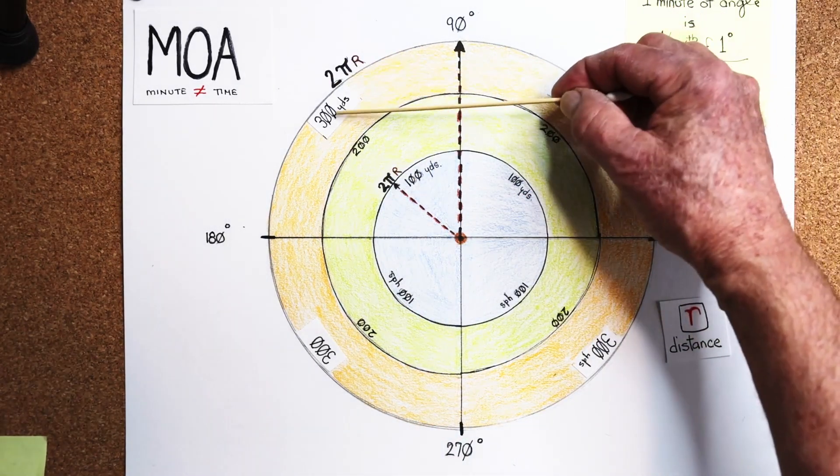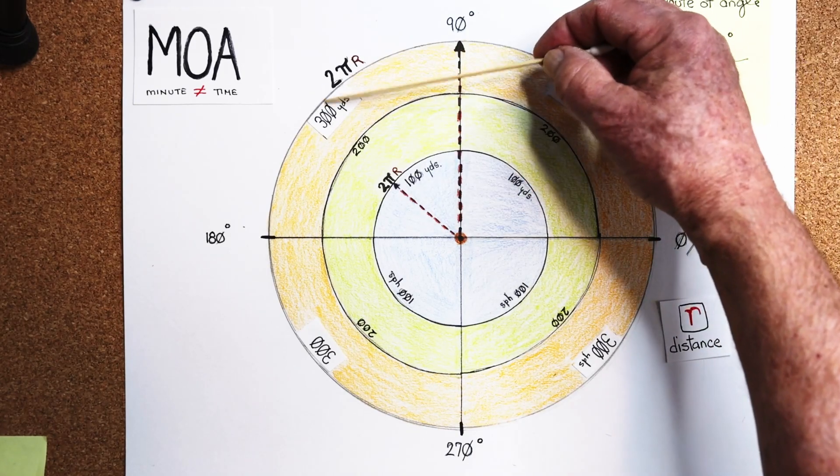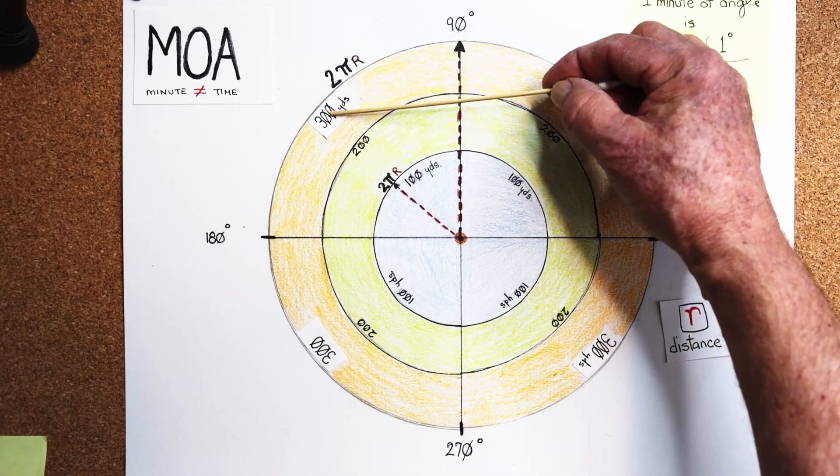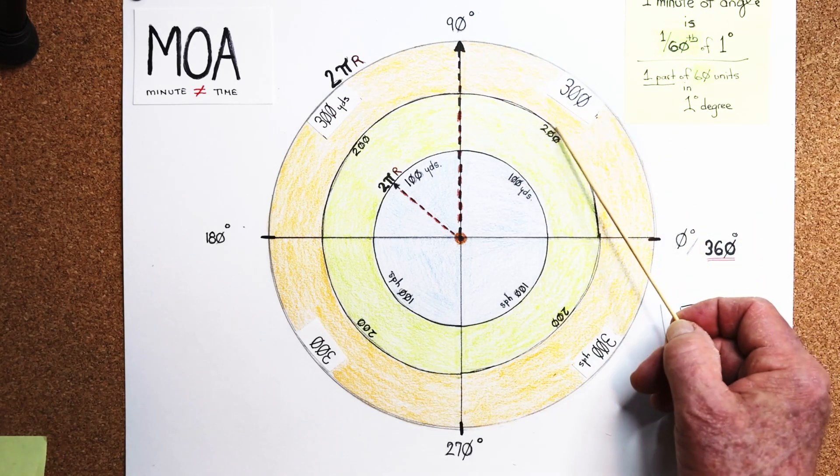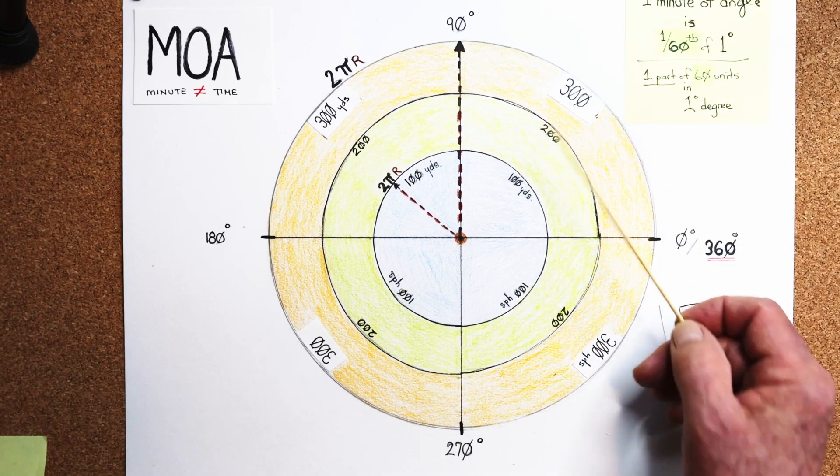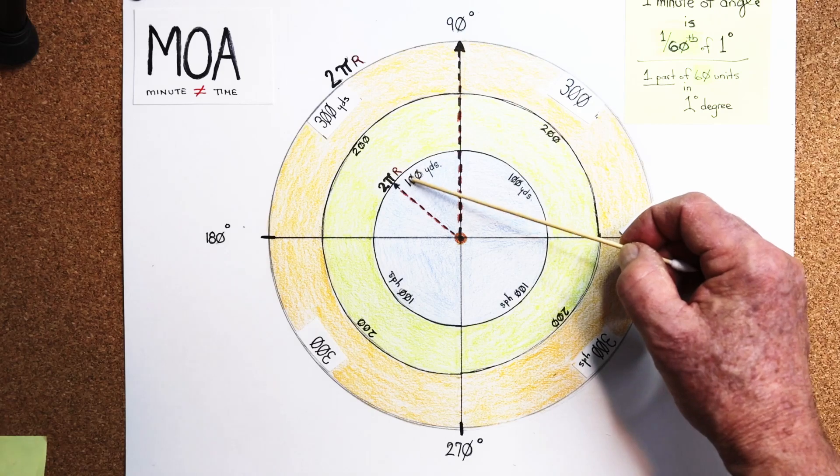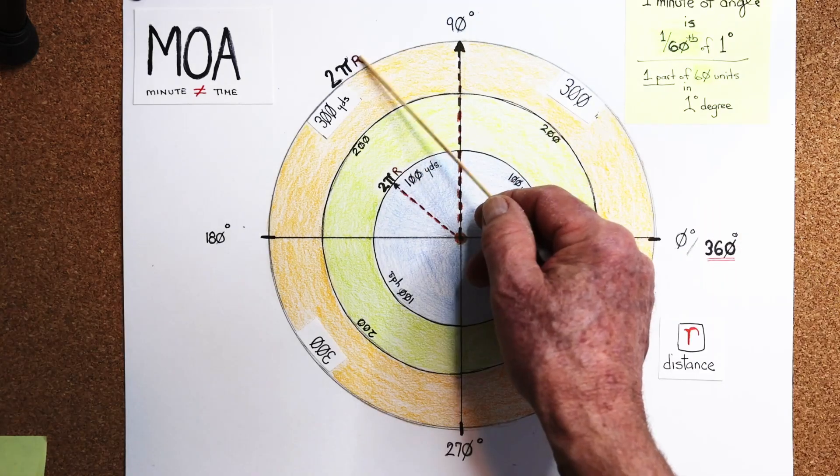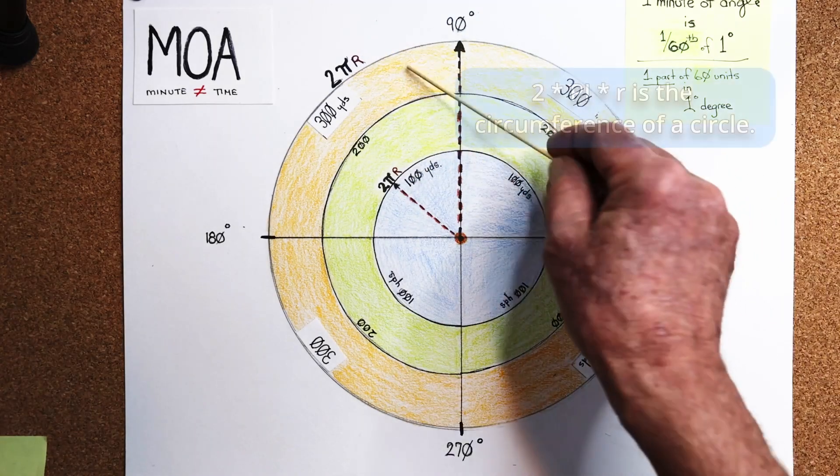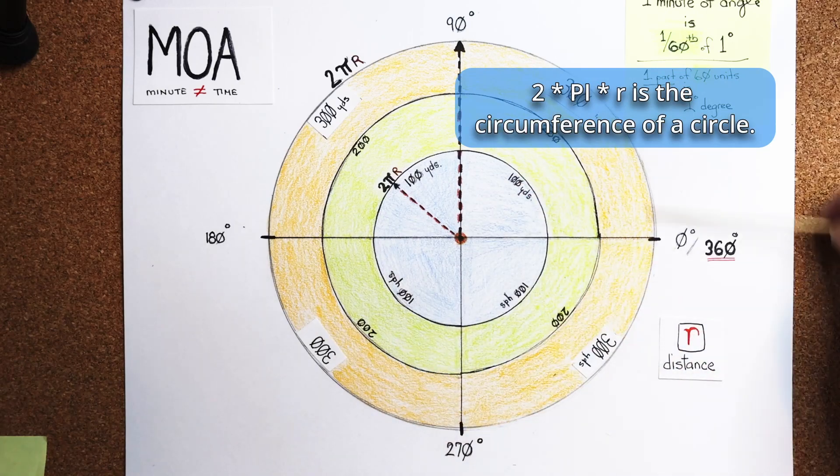The r represents the distance from the center of the circle out to 300. So the r represents 300, the r would represent 200, and then the r would be represented with 100, 2πr, which is, by the way, the circumference of each one of these circles.